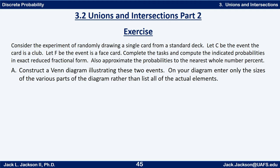The first thing I'd like you to do is construct a Venn diagram illustrating these two events. In your diagram, don't actually enter all the card names, but only the sizes of the various parts. Rather than listing all 12 face cards, just put numbers inside so they add up to 12. Press pause now.